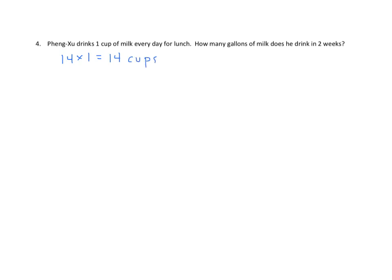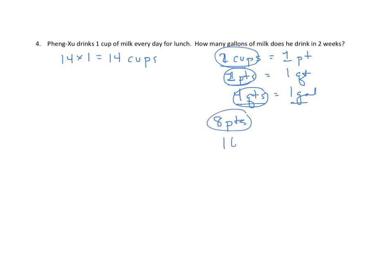Now, we have to find the conversion factor between cups and gallons. That may be one that you don't have memorized. But we know that 2 cups equals 1 pint. And we know that 2 pints equals 1 quart. And we know that 4 quarts equals 1 gallon. So, if I have a gallon, I have 4 quarts. So, 1 gallon equals 4 quarts. And if I take the 4 quarts and I break them down into pints, I'm going to have 8 pints. And if I have 8 pints and I break them down into cups, I have 16 cups. So, 1 gallon equals 16 cups.